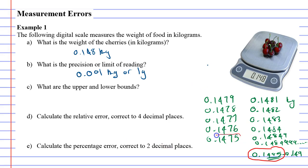And these two numbers that I've circled are called the lower and upper bounds. Because they are the smallest and largest amounts you could have that would still measure as 0.148 kilograms. So we're going to say the upper bound is 0.1485 kilograms. And the lower bound is 0.1475 kilograms.